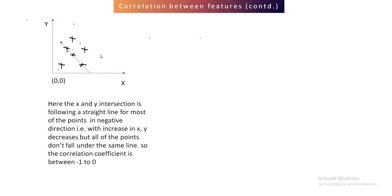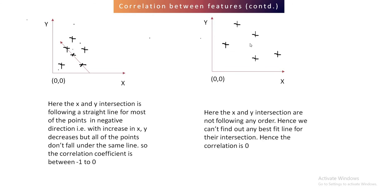In the next example, with increasing x, the y decreases, forming an inverse or negative correlation. Many points follow a straight line but not all, so the correlation is negative but the correlation coefficient lies between minus one and zero. In the last scenario, all intersection points of x and y are lying in a scattered manner, so we can't form any relationship between x and y — the correlation coefficient is zero.